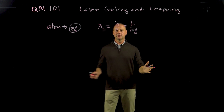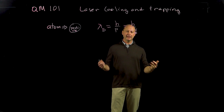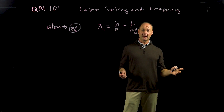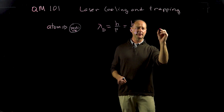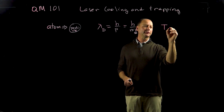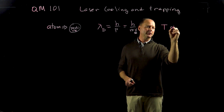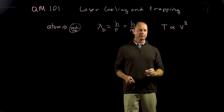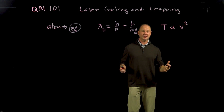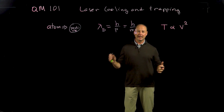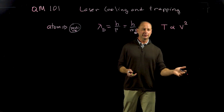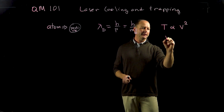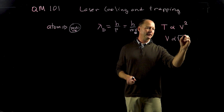If we have an atom, what is related to velocity? It turns out temperature is related to velocity — temperature is proportional to velocity squared. So when it's hot outside, atoms are jiggling around like crazy, and when it's colder outside, the atoms are jiggling less. So velocity is proportional to the square root of temperature.